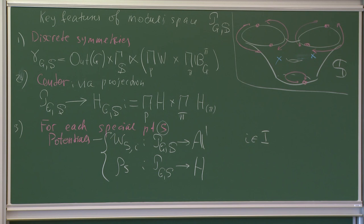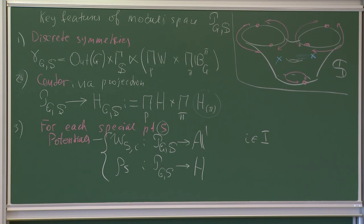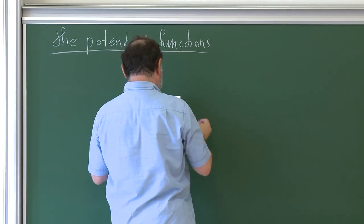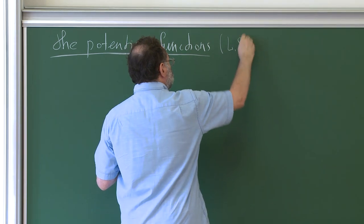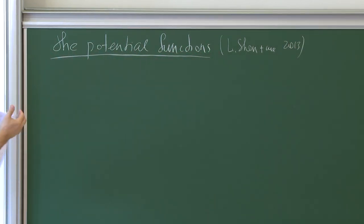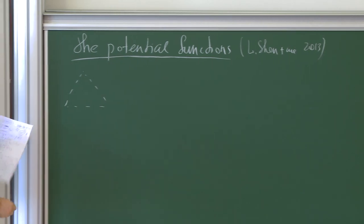There are many Cartan projections floating around. Basically, every puncture gives a projection to Cartan, and every special point gives a projection to Cartan. Using the special points, we can combine those projections and get projections to Cartan related to the boundary component. Now, the main question: who are those potentials? We used them with Shen in a paper around 2013, where these potentials played a role in statements like mirror symmetry. But now they will play an entirely different role.